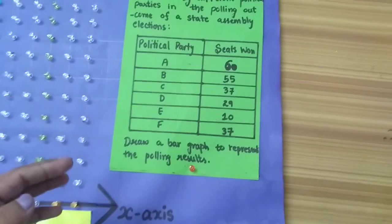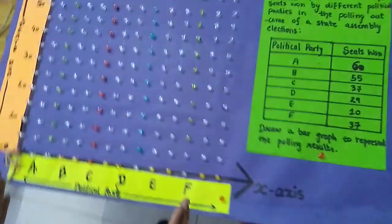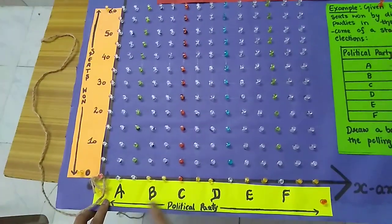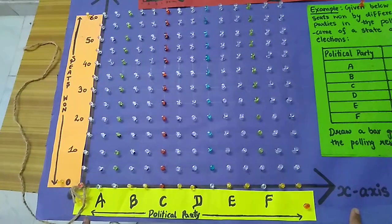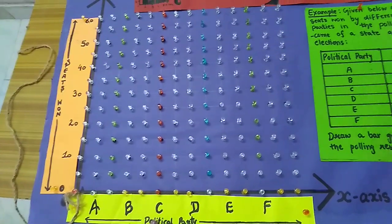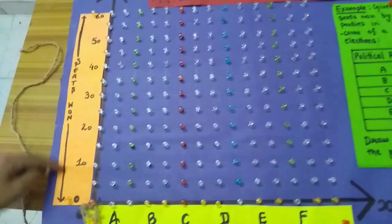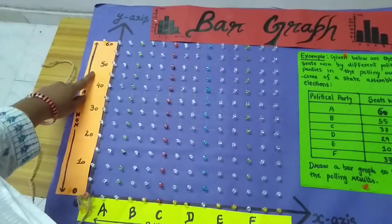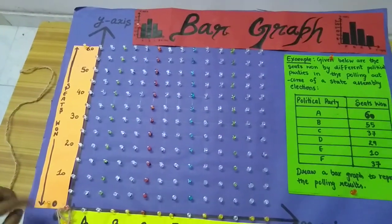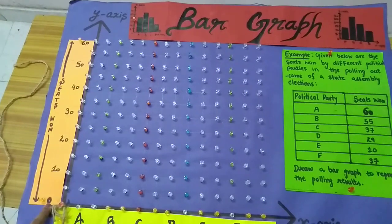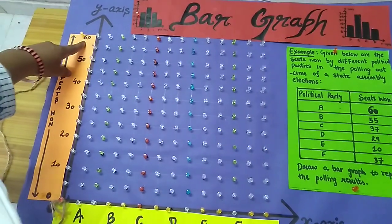Now I will draw here bar graph. In this bar graph, this is my X-axis. In this I have different political parties A, B, C, D, E, and F. Now in Y-axis, I have different seats won by them. Here I started it from 0 and ended up at 60.